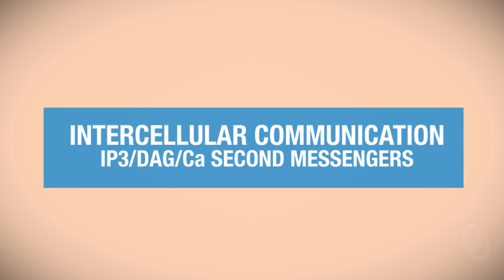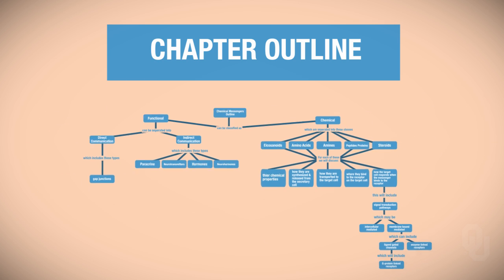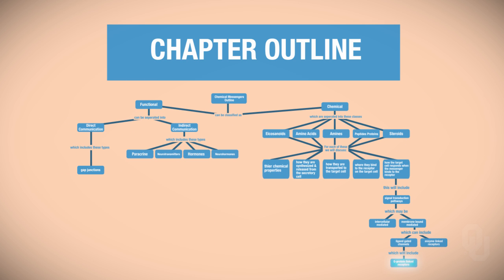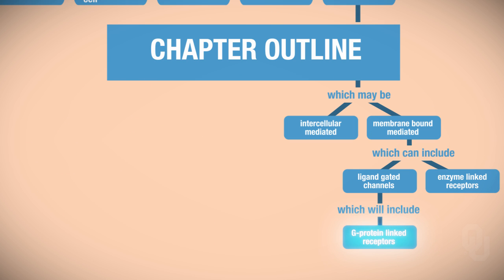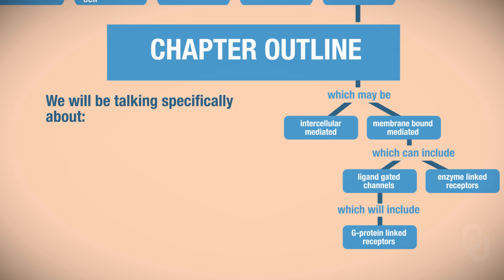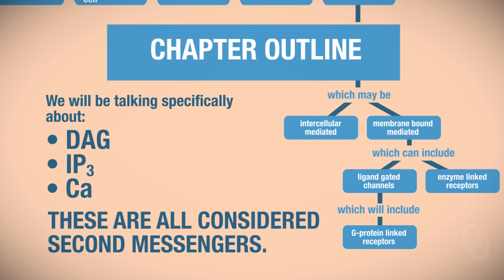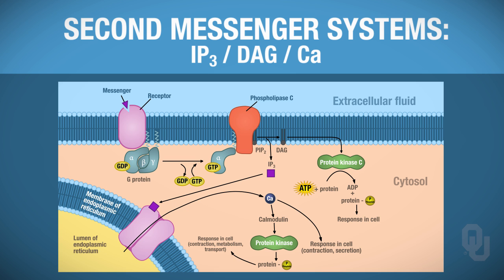Here we will continue our discussion of second-messenger systems. We're still talking about G-protein-linked receptors, and now we're going to be talking specifically about DAG, IP3, and calcium — all considered second messengers. On this one figure, you have all three second-messenger systems in one diagram. You're going to see a lot of similarities across these second-messenger systems, and there's also some connectivity between them as well.